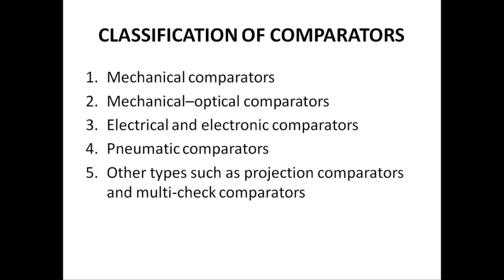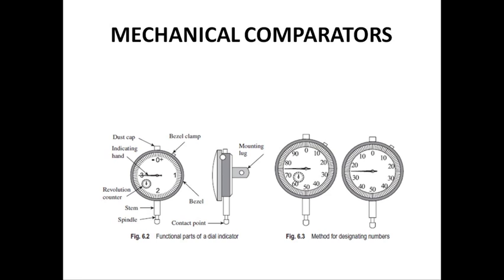We will now understand the different classifications of comparator. You might have observed the usage of the dial gauge — the dial gauge falls under the mechanical comparator. We also have mechanical and optical comparators that use mechanical and optical principles together. We have electrical and electronic comparators, which have advantages over mechanical instruments. Then we have pneumatic comparators, and also many other types such as projection comparators and magnetic comparators. Mechanical comparators have been used for a very long time and provide simple, cost-effective solutions.